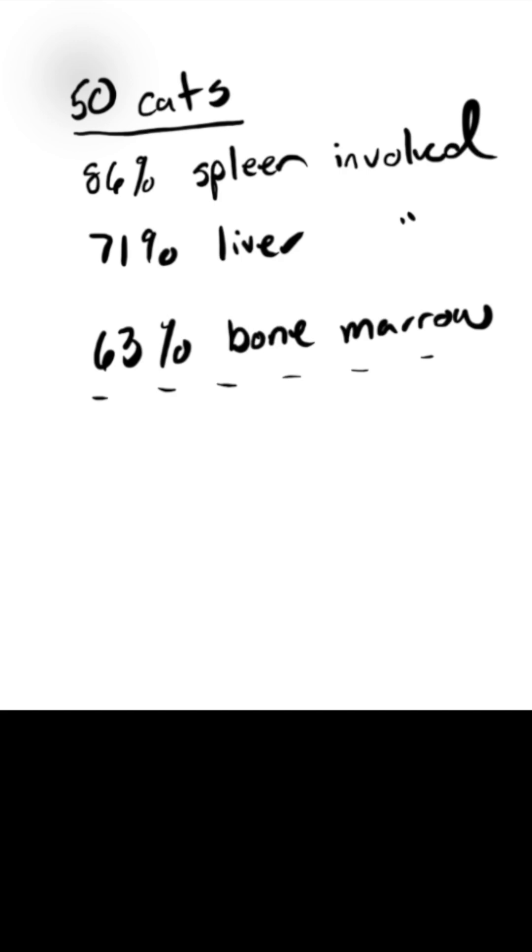Liver involvement was also frequent, occurring in 71% of cats tested. In many cases, both the spleen and liver were affected. In contrast, a high number of plasma cells in the bone marrow was found in 63% of cats where bone marrow was evaluated. Anemia, or low red blood cell count, was reported in 67% of cats.